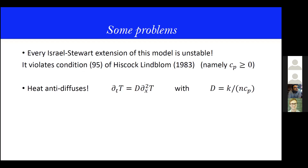The reason is quite simple. When you have the diffusion equation for the temperature, the coefficient in front of it must be positive because of the second law. So if you have a negative specific heat, you have the inverse heat equation, and this is of course a problem, because the inverse heat equation doesn't behave well and is not even physical.